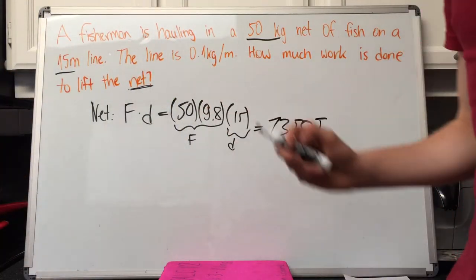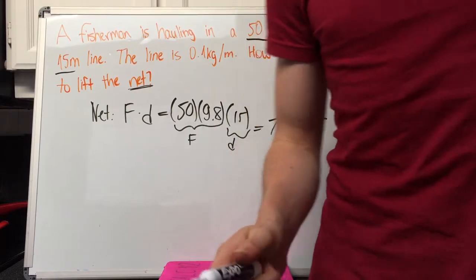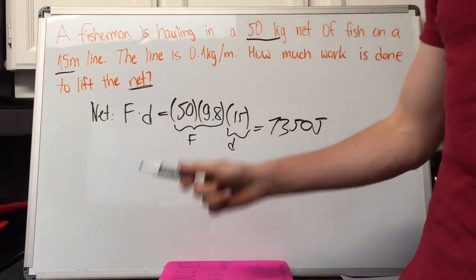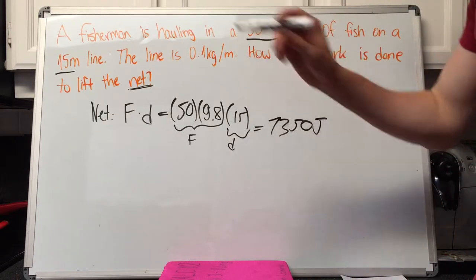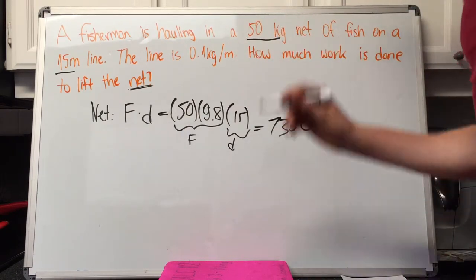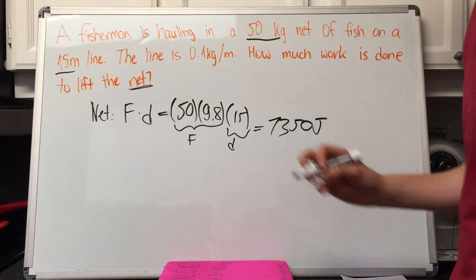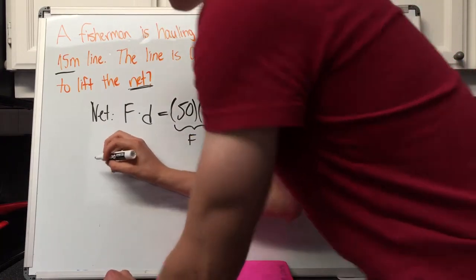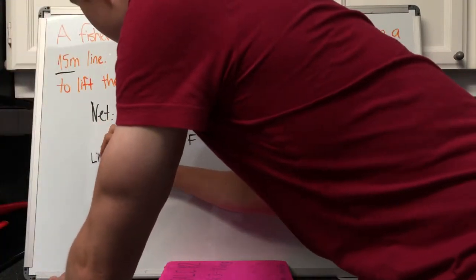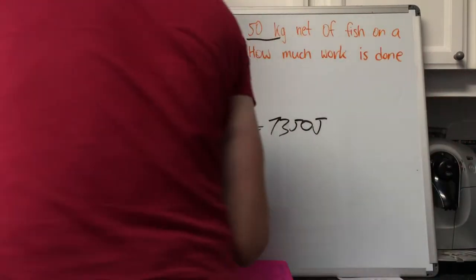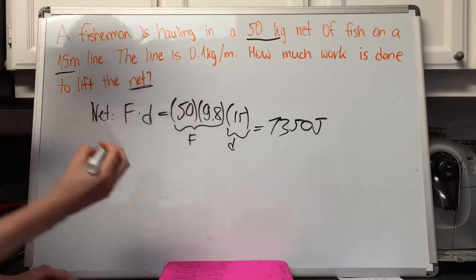The next step is to find the work done to lift the line. We know the line is 0.1 kg per meter and 15 meters long. To do the line, we have to...